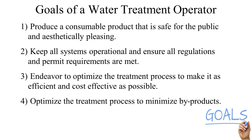They must also ensure the demands of the distribution system are met. The amount of gallons used in a distribution system, or the system demand, varies throughout the day, and it is common for the plant rate to increase and decrease daily to meet that demand.